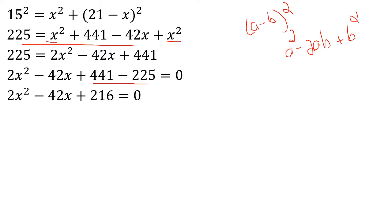So we get 2x squared minus 42x plus 216 equal to 0.